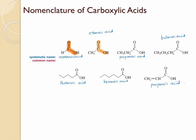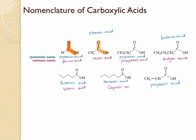Now let's also do the common names — obviously you have to memorize these. So the one-carbon compound is formic acid. The two-carbon is acetic acid. The three-carbon is propionic acid. The four-carbon is butyric acid. The five-carbon is valeric acid, and the six-carbon is caproic acid. And the unsaturated three-carbon is acrylic acid.